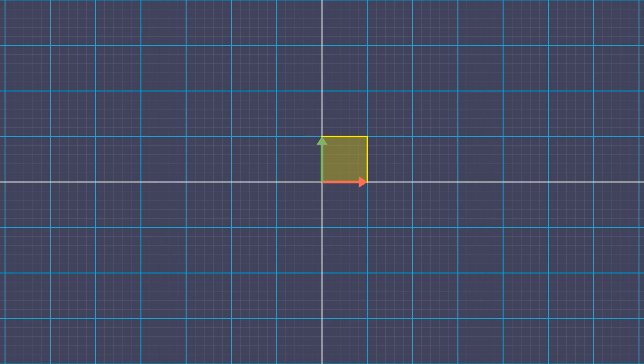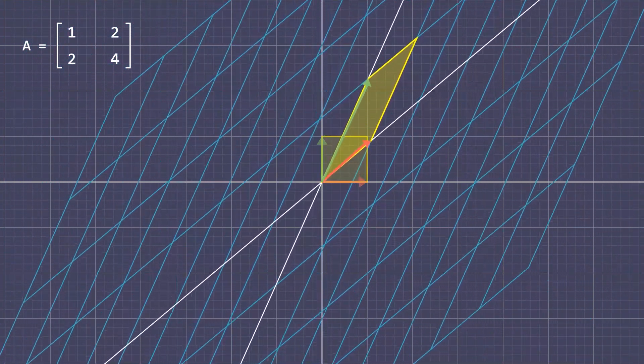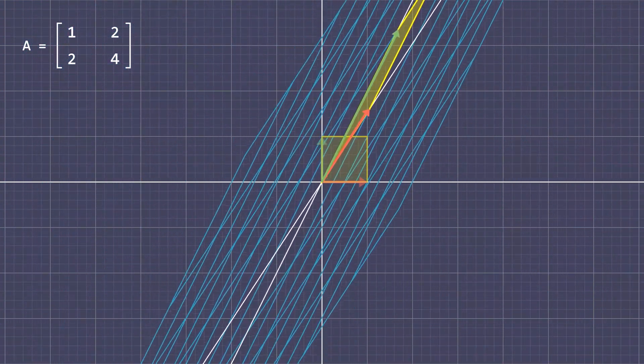Notice that the parallelogram described by the basis vectors of a 2D space is a unit square. Now when one row vector of the matrix is a scaled version of the other, the parallelogram described by the vectors in the transformed space has no area.